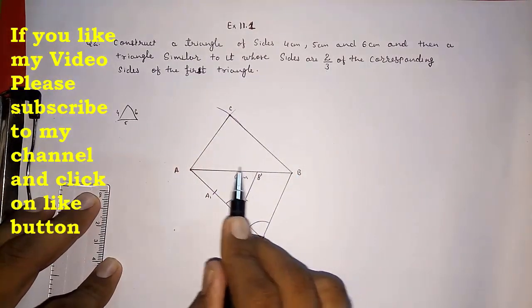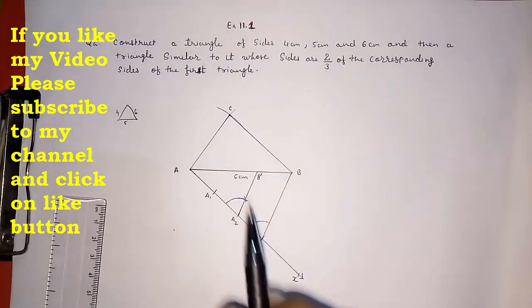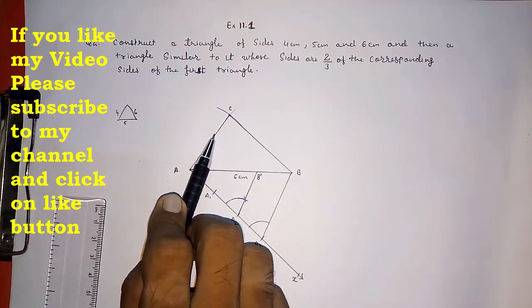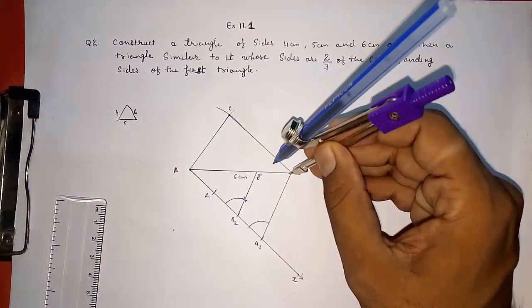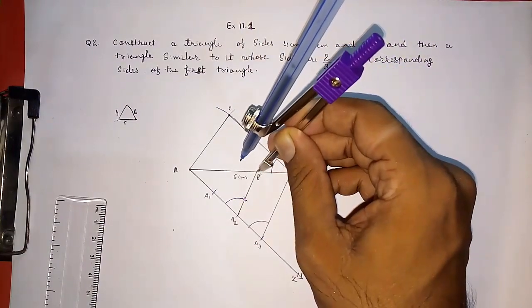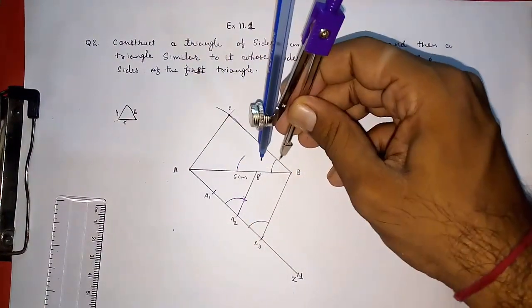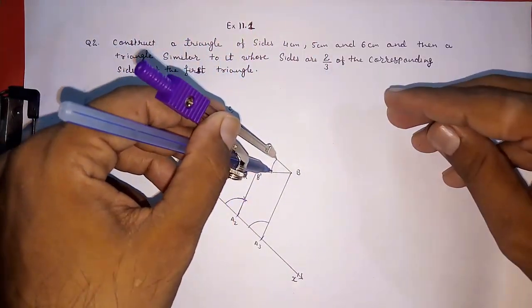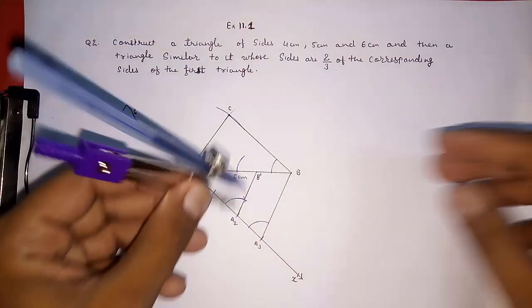Our original triangle ABC gave us the line AB dash as two parts of AB. Now we need two parts of BC as well, but we cannot get it directly — we must draw a line through B dash parallel to BC. Again we make corresponding angles equal: make an arc at B on line BC, then with the same measurement make an arc from B dash, measure the chord distance and replicate it from B dash.